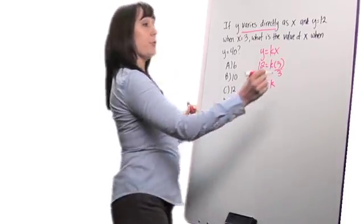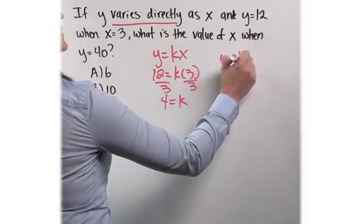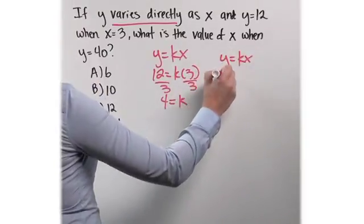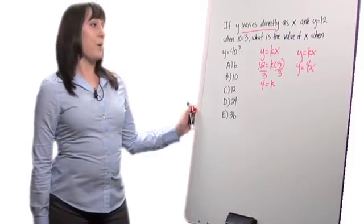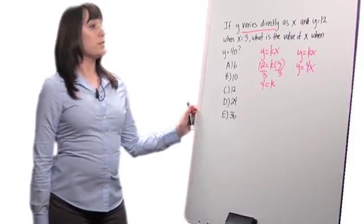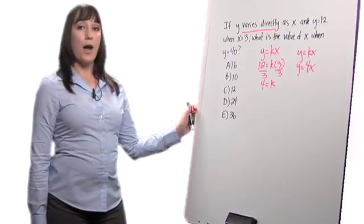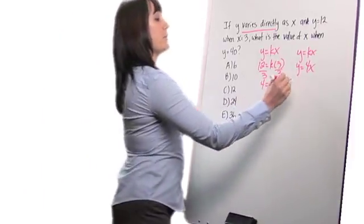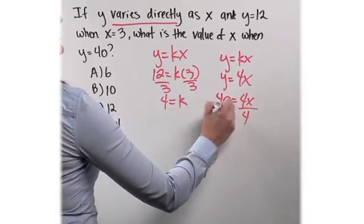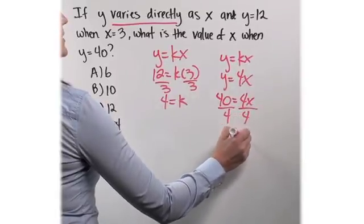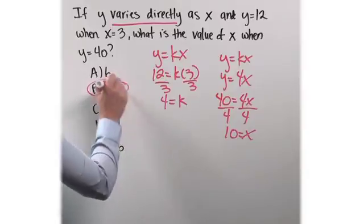Now, I'm going to write my formula again, replace k with 4, and finish solving the problem. It then says, what is the value of x when y is equal to 40? So I replace y with 40, divide both sides by 4, and I have 10 equals x. And my answer is b.